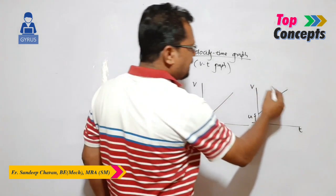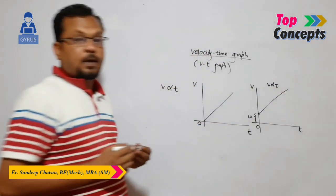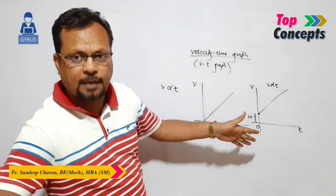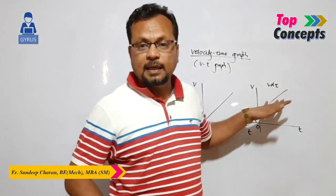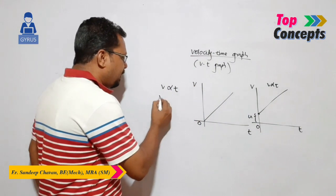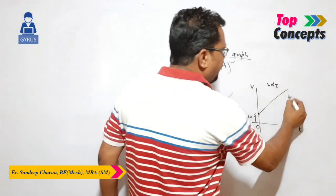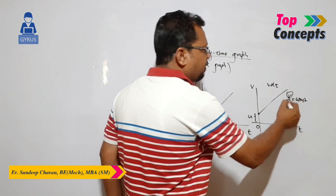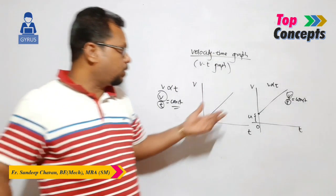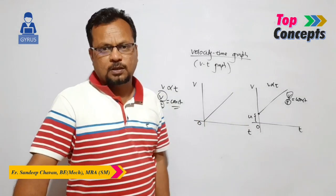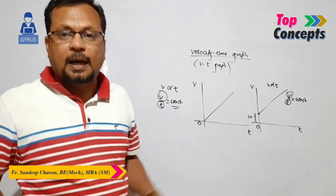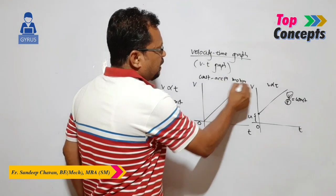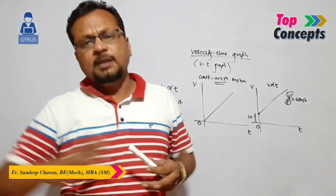In this case, V is directly proportional to T. That means if velocity is increasing with respect to time in a constant proportion, the ratio V divided by T is constant. It means change in velocity divided by time is constant — that is, the slope of the curve is constant, and that means acceleration is constant. So this graph indicates that the motion of the particle is constant acceleration motion — whatever acceleration there is, it remains constant throughout the motion.